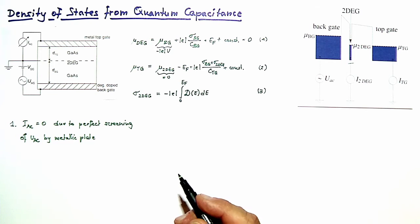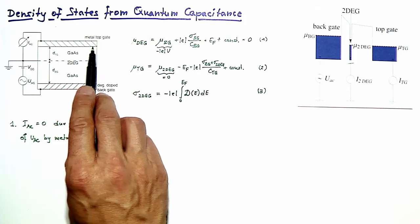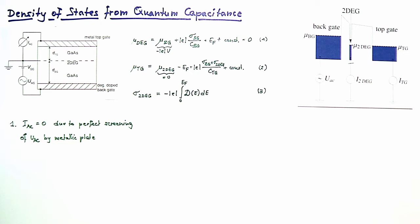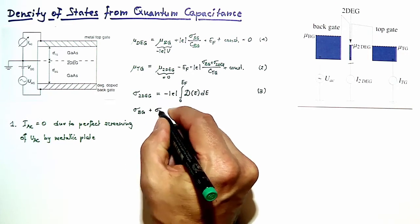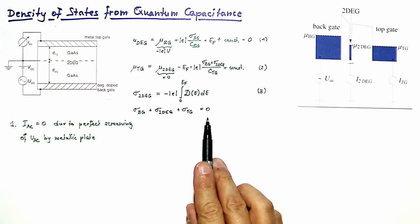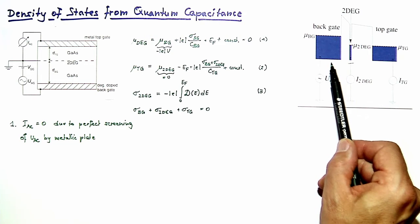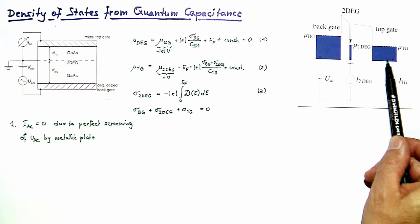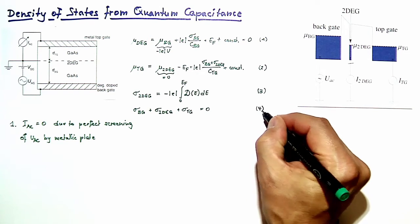We have three unknowns — sigma_backgate, E_Fermi, and sigma_2DEG — and three equations to determine these quantities, so the problem is well-solvable. At the end we are interested in the current flowing from the topgate into ground, i.e., how the induced charge on the topgate changes. This charge can be worked out from charge neutrality: sigma_backgate plus sigma_2DEG plus sigma_topgate equals zero. This follows from applying a Gauss box around the whole structure with end faces in the backgate and topgate where electric fields are zero, giving a surface integral of zero and therefore zero total enclosed charge. This is our fourth equation, and we now have four unknowns: sigma_backgate, sigma_2DEG, sigma_topgate, and E_Fermi.